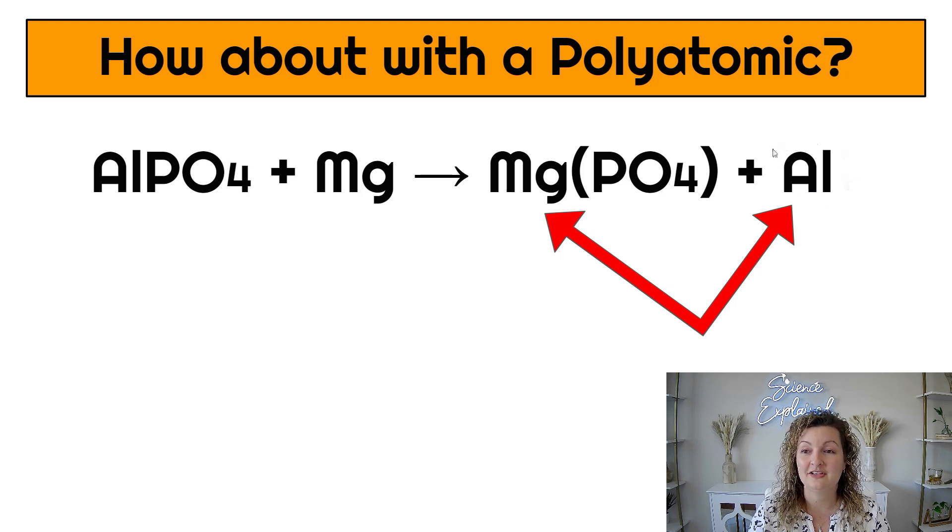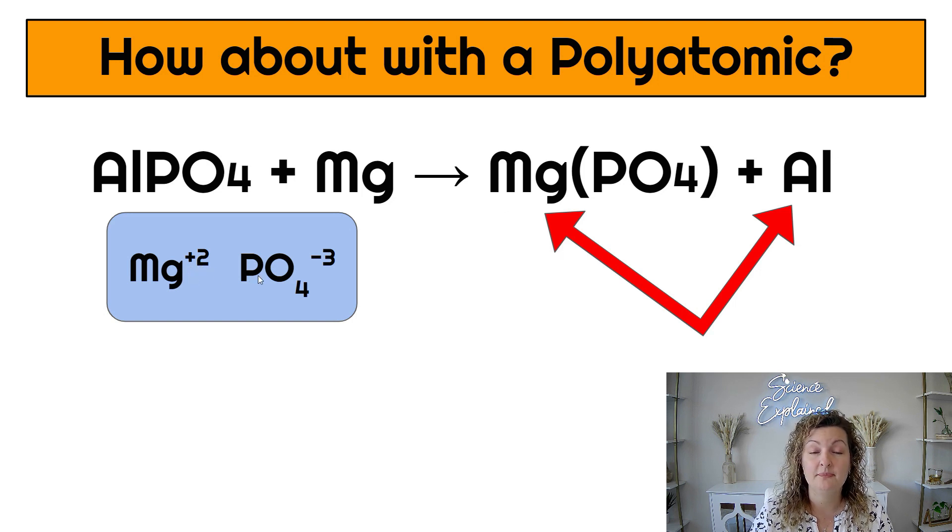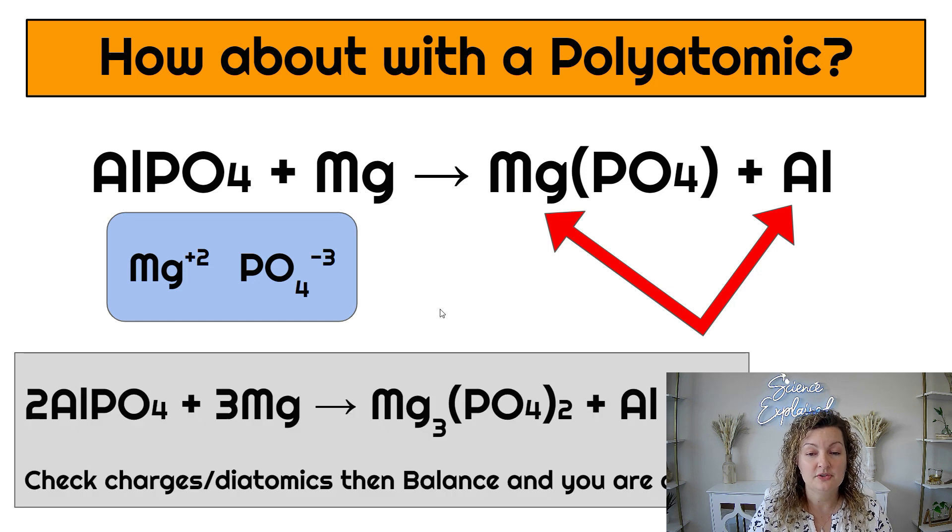Now we need to ask ourselves, is our standalone aluminum a diatomic? It is not. So we are not going to write the two there because it's not a diatomic, but we still need to balance charges. So if you look up the charges, magnesium is going to be positive two and PO₄ is going to be negative three. If we swap and drop this three, we'll go down to the magnesium and the two will go down to the PO₄. So it's going to look something like this. Once it's all said and done, notice that three is now on the magnesium and the two is outside of the parentheses on the PO₄.